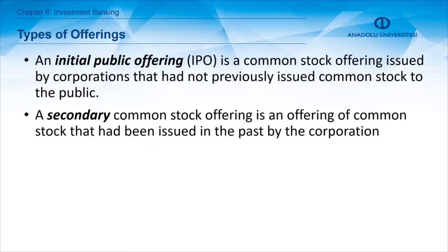There are different types of offerings. An initial public offering (IPO) is a common stock offering issued by corporations that had not previously issued stock — this is the first time companies go public. On the other hand, a secondary common stock offering is an offering of common stock that had already been issued before by the corporation.